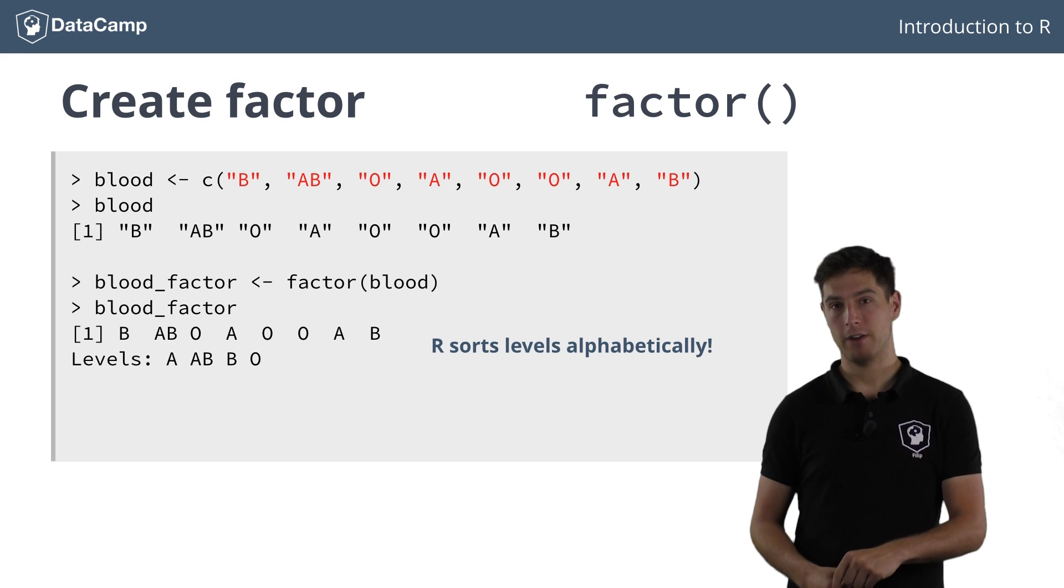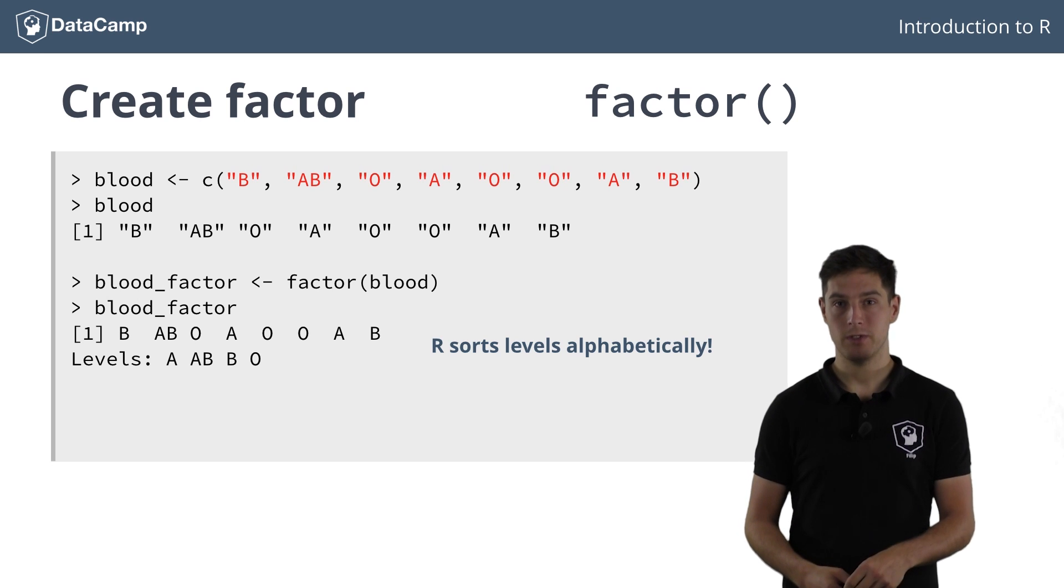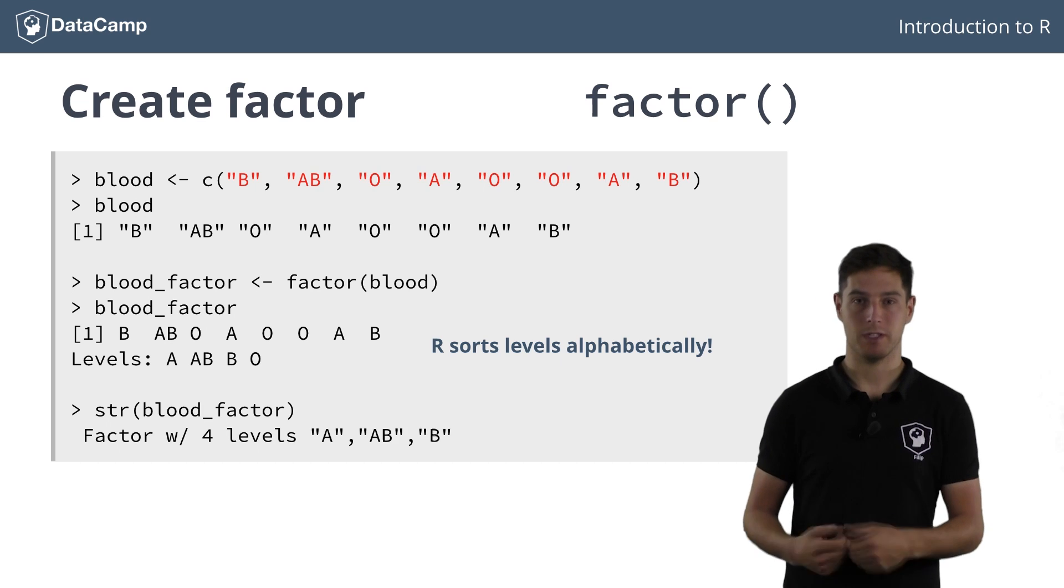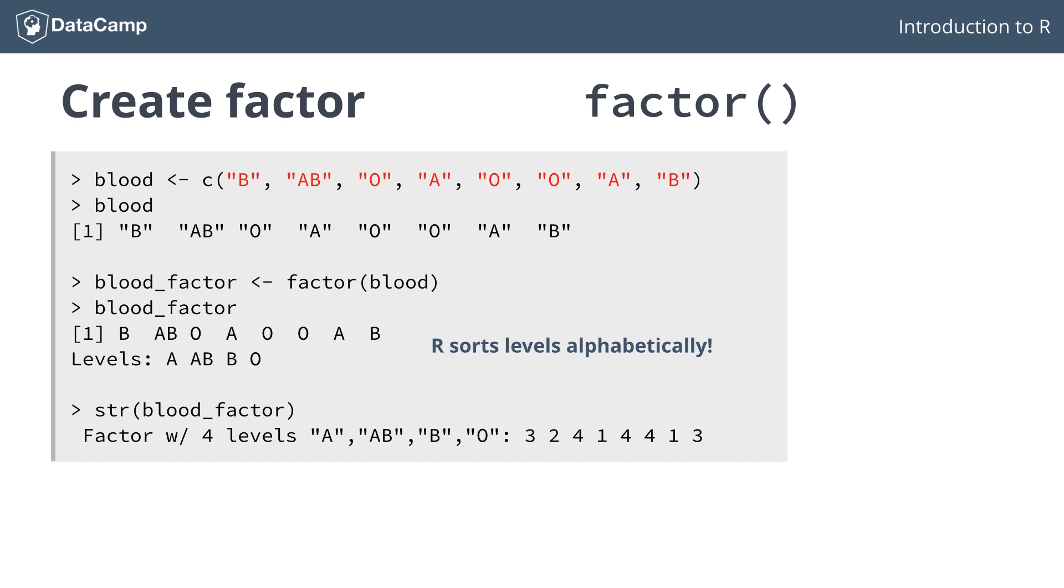Next, it converts the character vector, blood in this example, to a vector of integer values. These integers correspond to a set of character values to use when the factor is displayed. Inspecting the structure reveals this. We're dealing with a factor of four levels. The A's are encoded as 1, because it's the first level, AB is encoded as 2, B as 3 and O as 4.